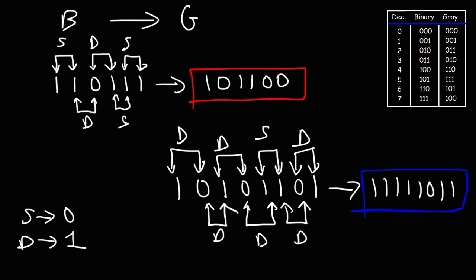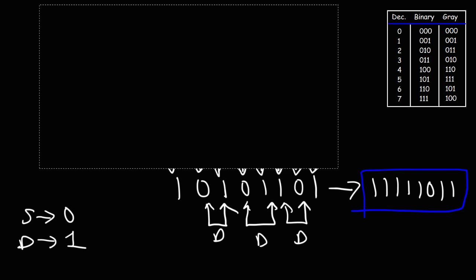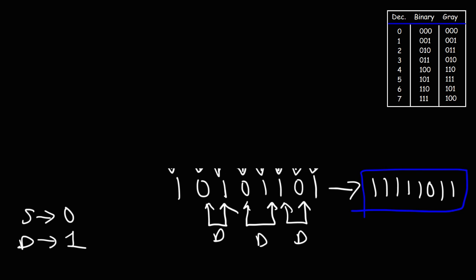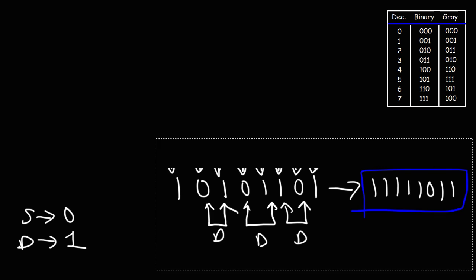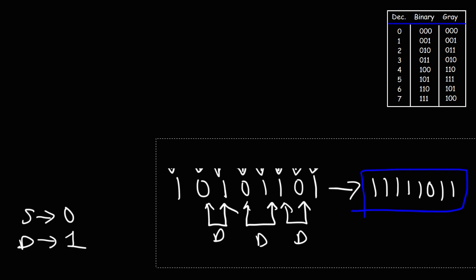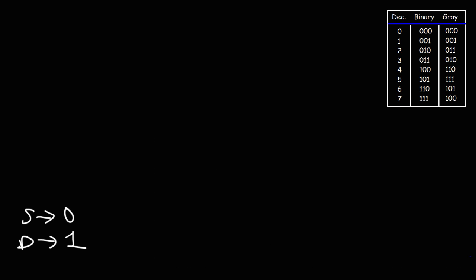So now you know how to convert from binary code into gray code. But now let's talk about how we can go backwards — that is, how to go from gray code into binary code.